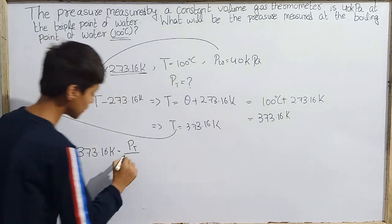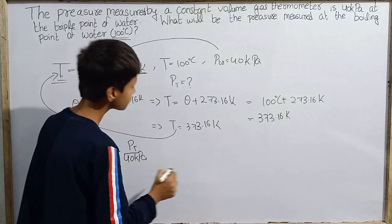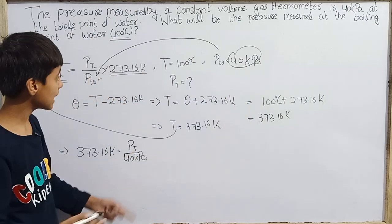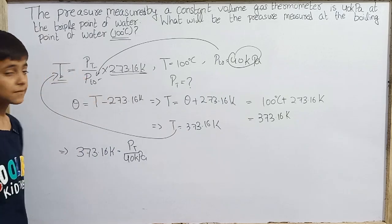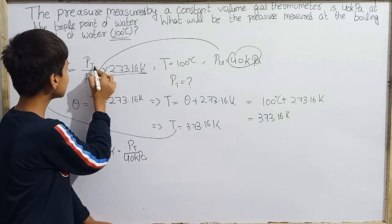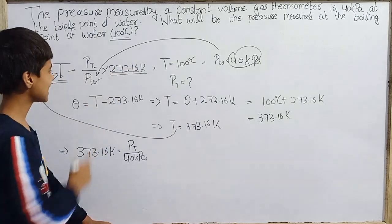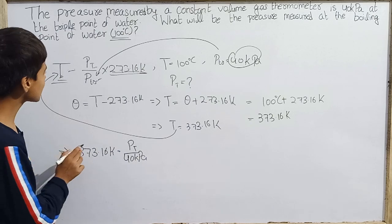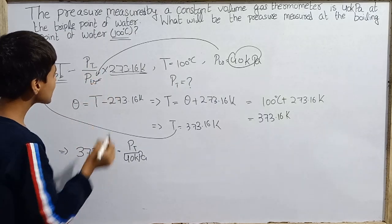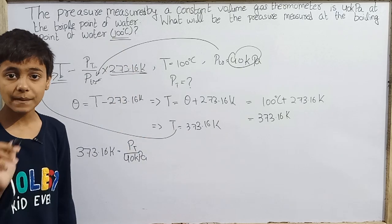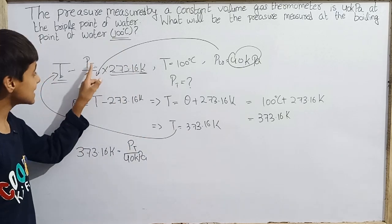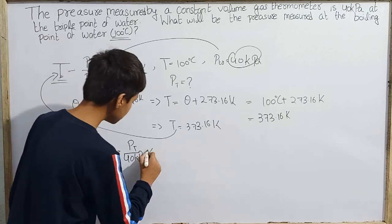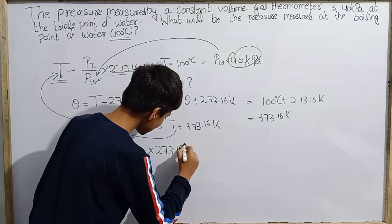So 373.16 Kelvin is given by P at temperature T. Now P at T over P at triple point of water, 40 kilopascals. If we don't keep this in SI units, then there will be no problem. Our formula will work. Just this and this is in Kelvin. If this is in another system of units, no problem. This will cancel. No dimensions or units. If you keep this in kilopascals, then you will get this in kilopascals. But those two must be Kelvins. So into 273.16 Kelvin.